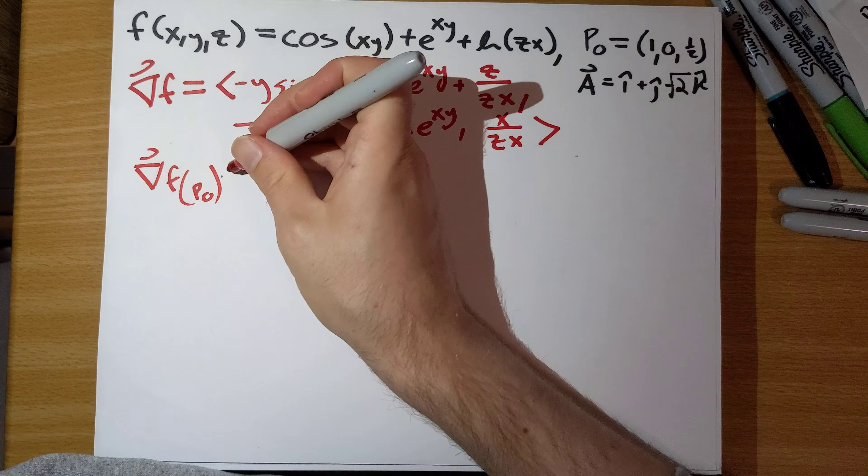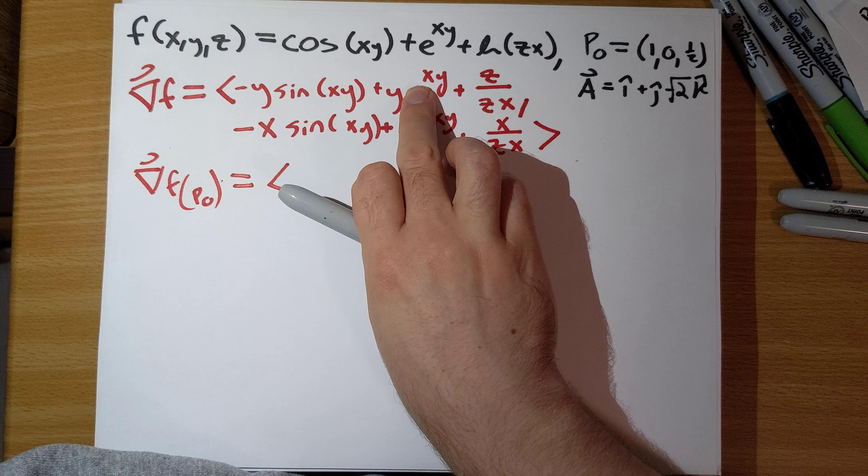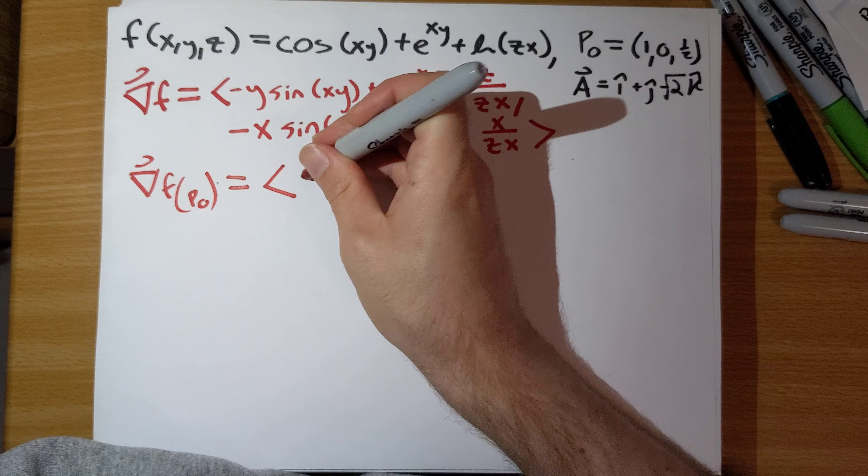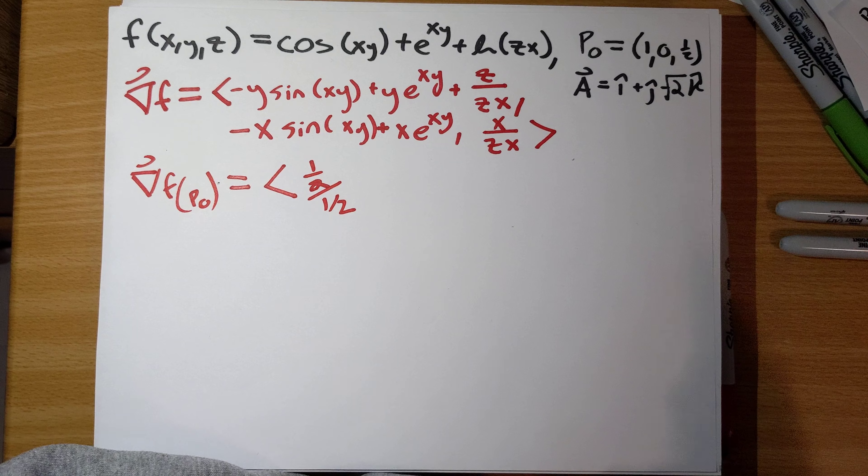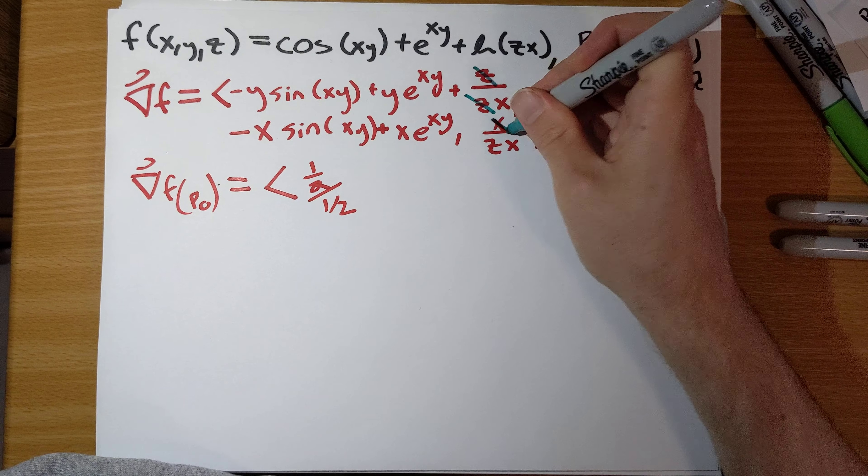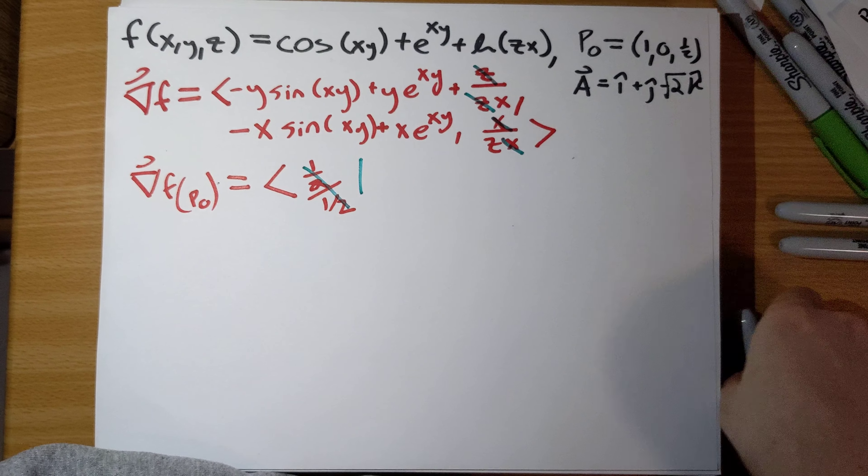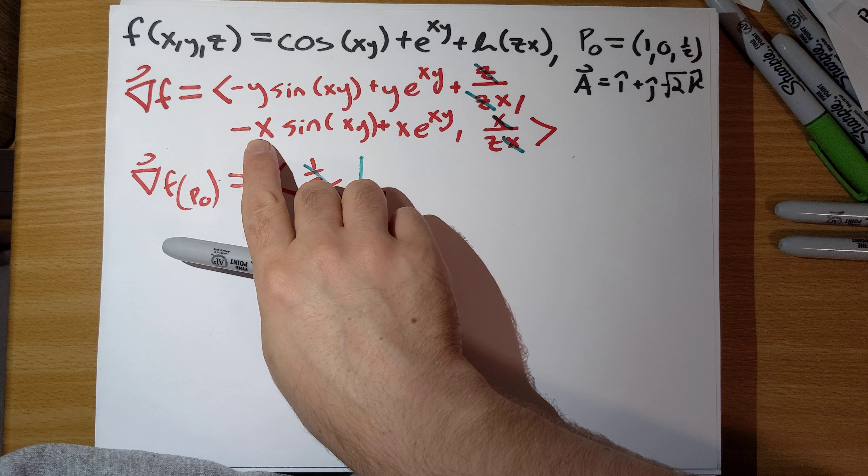We need this evaluated at this point here. So if x is 1 and y is 0 and z is 1 half, that is 0, that is 0, and we end up with 1 half over 1 half. Those z's, those x's are canceling out there, so that's just 1.